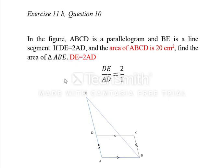DE is 2 times AD — so if AD is 1, then DE is 2. We have to find the area of triangle ABE, the big triangle. From the given condition DE = 2 times AD, we can write DE over AD equals 2 over 1, meaning DE is 2 and AD is 1.